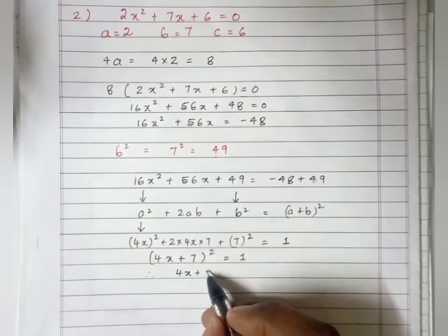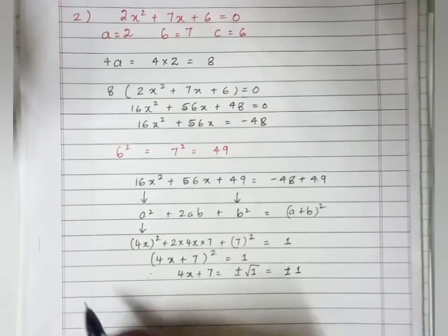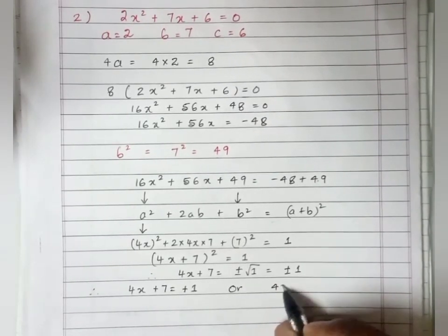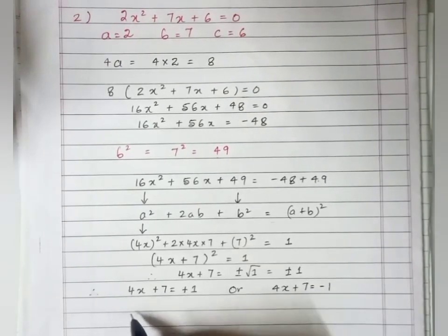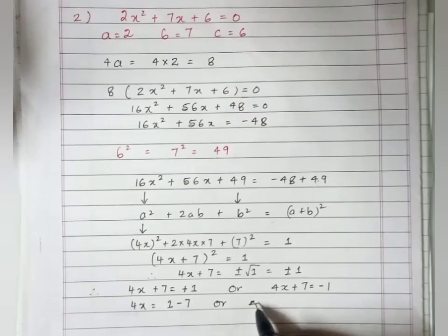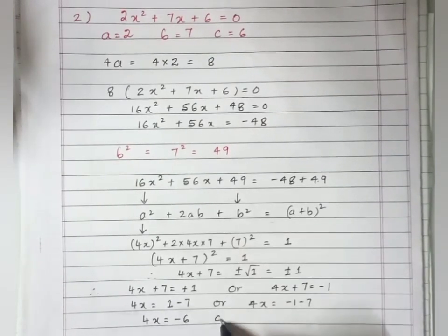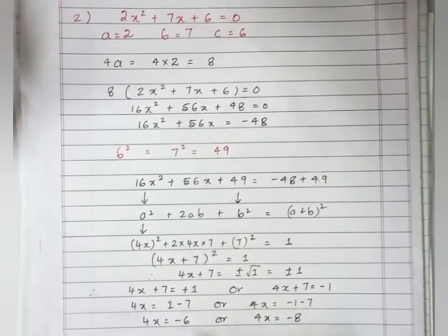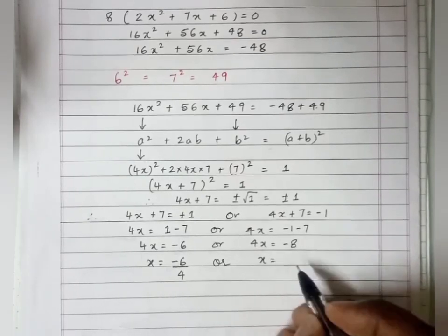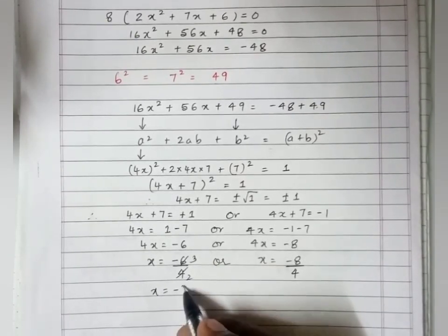Remove the square and take the square root: 4x + 7 = +1 or 4x + 7 = -1. Shifting 7 to RHS: 4x = 1 - 7 = -6, or 4x = -1 - 7 = -8. So x = -6/4 = -3/2, or x = -8/4 = -2.